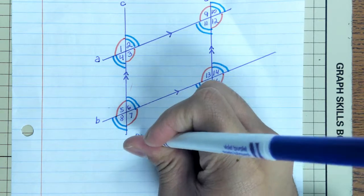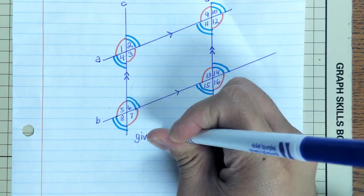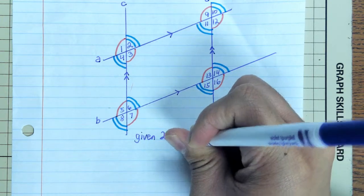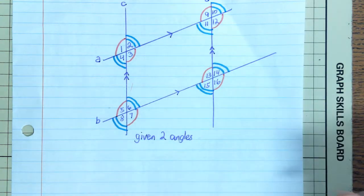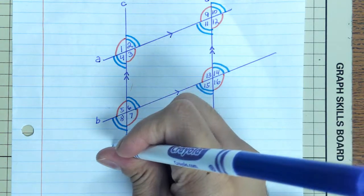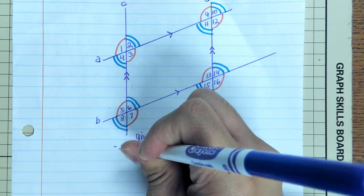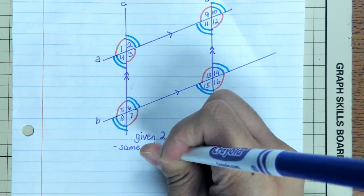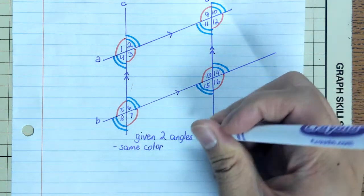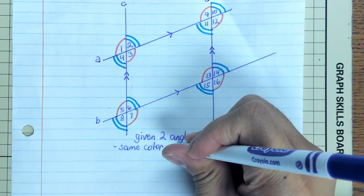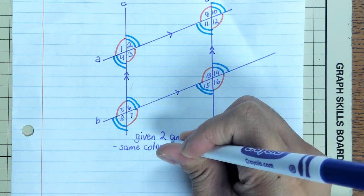So if you are given two angles, and if the two angles you pick are the same color, that means those two angles are congruent.